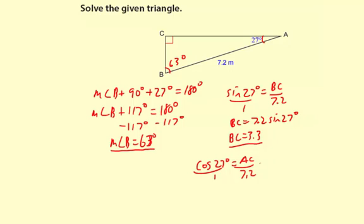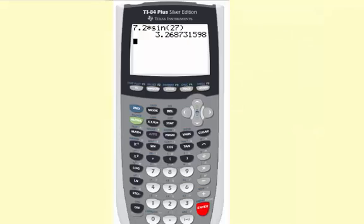So cross multiply, and I'll write the work over here. AC equals 7.2 cosine of 27 degrees. Let's get the calculator. 6.415. We'll just call it 6.4.